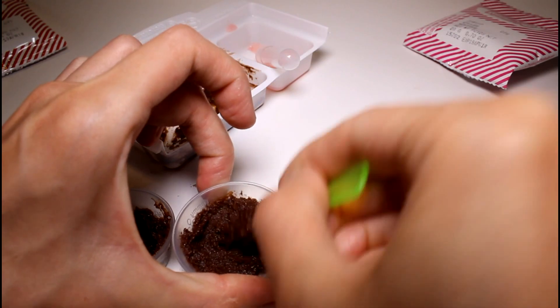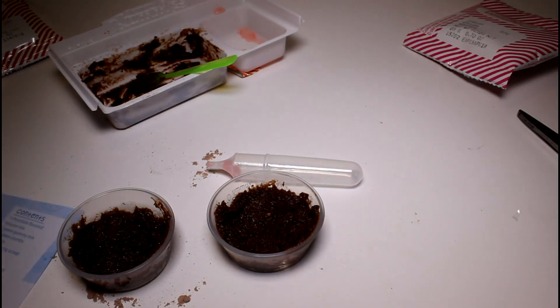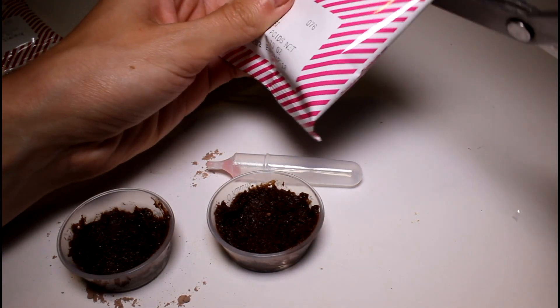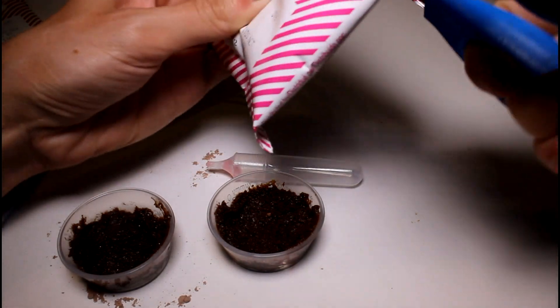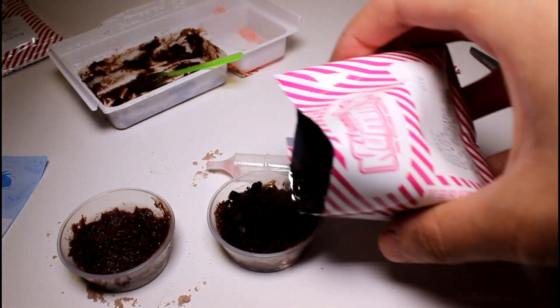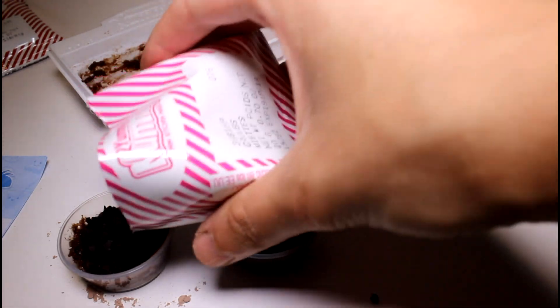And then we gotta get the gummy worms out when they're done and then add the crumbs. But I'm gonna go ahead and add the crumbs first. So let's just pour some crumbs on the top of each one.